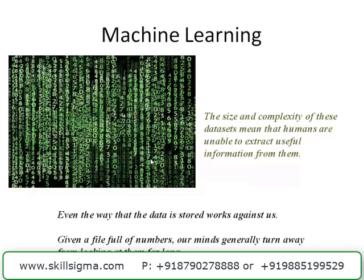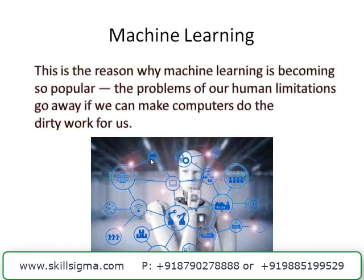Given a file full of numbers, our minds generally turn away from looking at them for a long time. We need to find a way out, and that somebody to help us is nobody else but the machine. Machines are not replacing us - machines are here to help us out. We will give this complex work of handling huge volumes of data numbers to machines, and we will just go ahead and take decisions. The decision-making power is still under you. Machines are just helping you to take decisions.